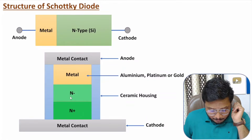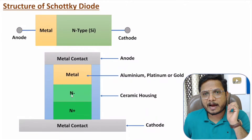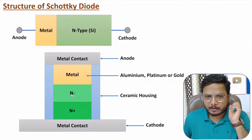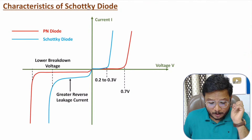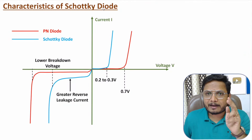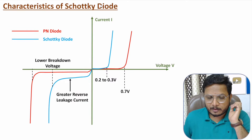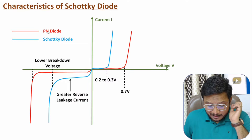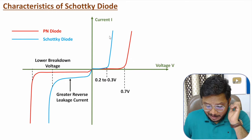However, it is not compulsory to have N-plus and N-minus regions — usually we have them only with microwave Schottky diodes. Now I'll explain the characteristics of the Schottky diode by comparing them with the PN junction diode. In the graph, the red color shows characteristics of the PN junction diode and the blue color shows characteristics of the Schottky diode.